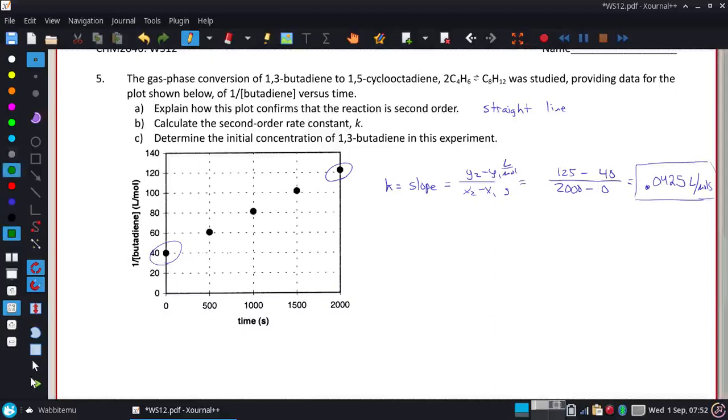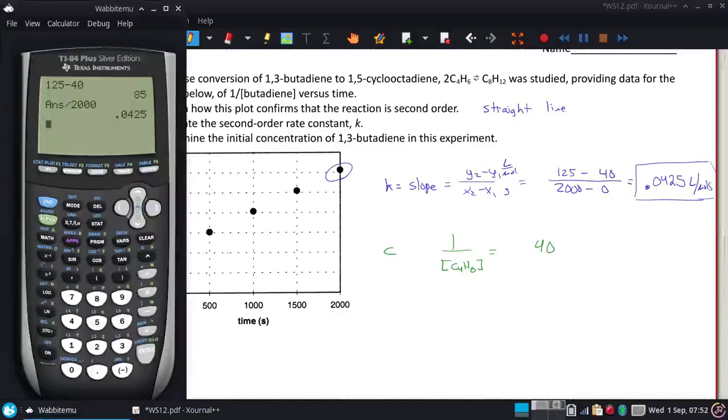All right. Part C, it just wants us to determine the initial concentration of 1,3-butadiene. Actually, it's a simple calculation. It's one that's easily overlooked. So initial concentration would be when time is zero. So that is equivalent to the concentration. But we're not saying the concentration is 40. We're saying 1 over the concentration of the butadiene is 40. So to get the actual concentration, I just need the inverse of 40. So the original concentration was 0.025.